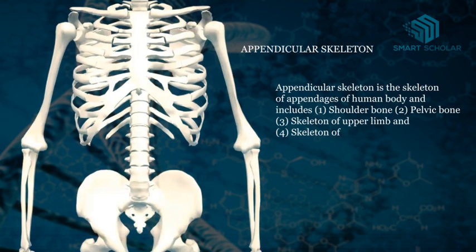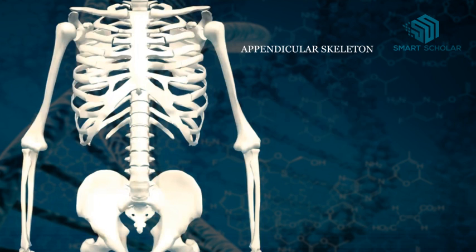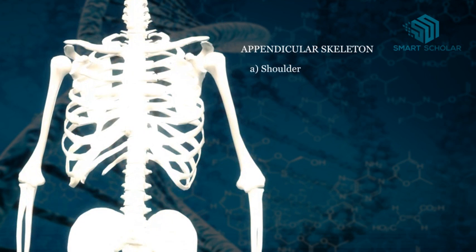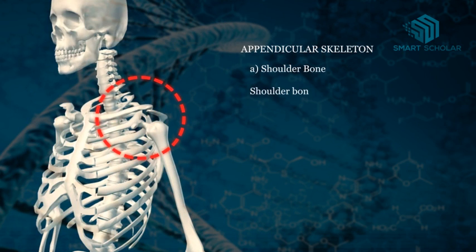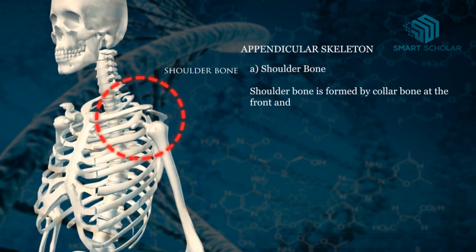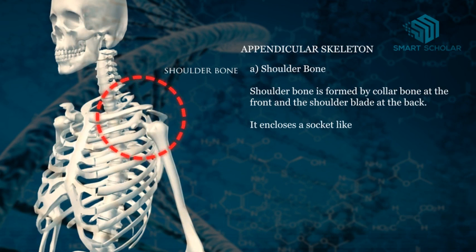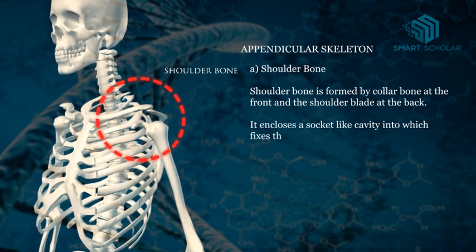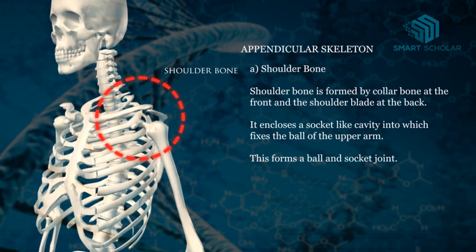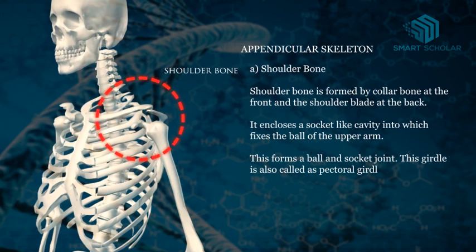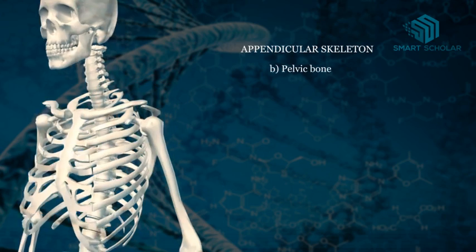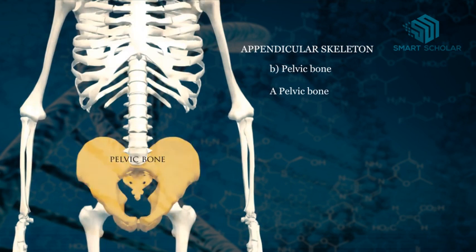Skeleton of lower limb. Shoulder bone is formed by the collar bone at the front and the shoulder blade at the back. It encloses a socket-like cavity into which fits the ball of the upper arm. This forms a ball and socket joint. This girdle is also called the pectoral girdle.